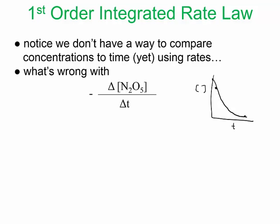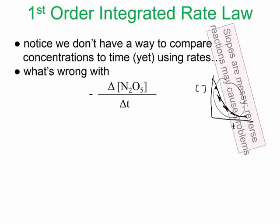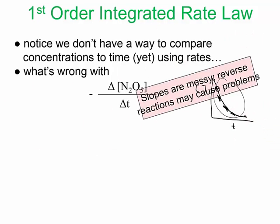So as time goes on you start building up product and you'll notice that if you measure the rate at different points in time you're gonna have a different rate. So you'll get something that's tangent to this line but not exactly representing this whole line. So that's the problem with this method. The slopes are not an accurate description and the reverse reaction can cause the rate to slow down over time.